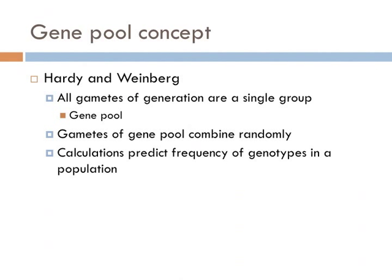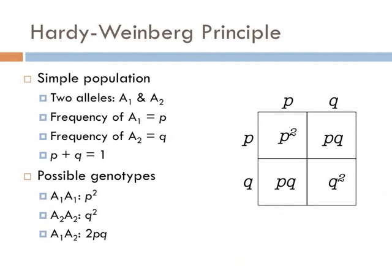Hardy and Weinberg also had an assumption about how these gametes interacted. They assumed that all gametes of a gene pool combine randomly. And from the matching of all gametes, they could calculate the predicted frequencies of what the expected genotypes of a new population would look like. They looked at a single gene within a population. Mendel's work showed us that for a simple gene, there are two alleles.